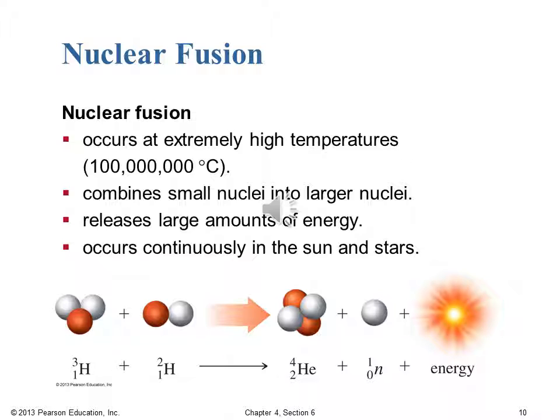In the case of our sun, we have tritium — hydrogen-3, a proton with two neutrons — being combined with deuterium — hydrogen-2, a proton and a neutron — and you're making helium: a nucleus of a helium atom, an alpha particle, plus a neutron, plus lots and lots of energy.